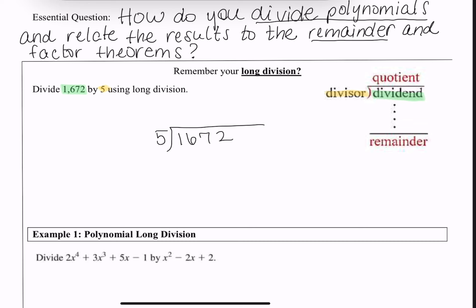Then you followed the method you were taught. You ask yourself: 5 times what will get me 1? Nothing — 5 doesn't go into 1 at all. How many times will 5 go into 16? Pretty close with 3: 3 times 5 gives me 15. Subtract, and I get 1.